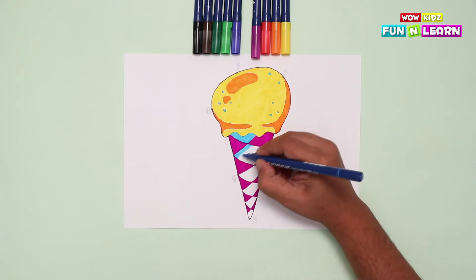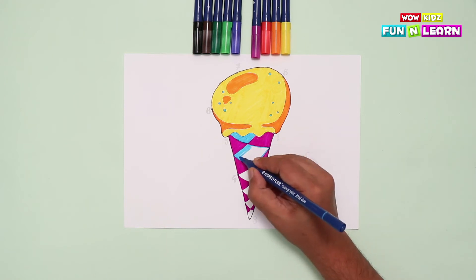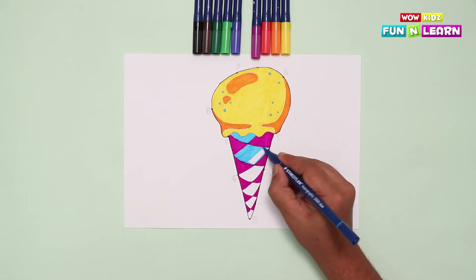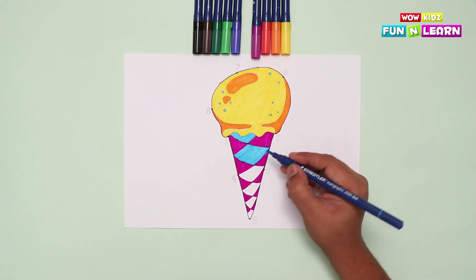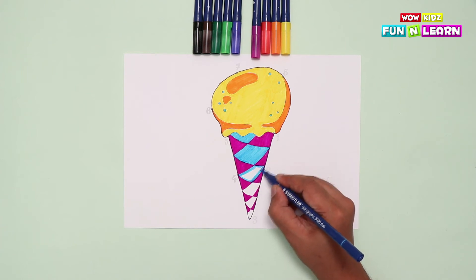Nice and easy. The edges first. Then fill in the color like this. We're getting good at this, aren't we? Start with the edges. And then fill in the gap. This was quick.